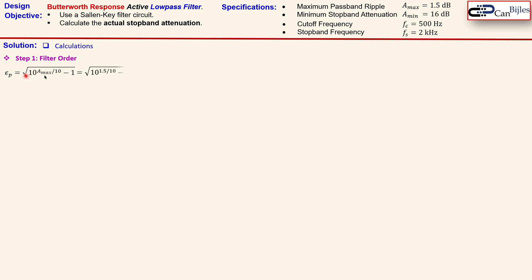And as then given by this formula when you substitute here 1.5 dB you get here 0.6423. In a similar case you do this for the epsilon_s which is related to that A_min. So A_min is here 16. You substitute the value here and you get here 6.2298.